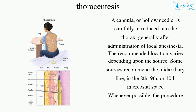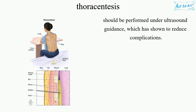A cannula, or hollow needle, is carefully introduced into the thorax, generally after administration of local anesthesia. The recommended location varies depending upon the source. Some sources recommend the mid-axillary line, in the 8th, 9th, or 10th intercostal space. Whenever possible, the procedure should be performed under ultrasound guidance, which has shown to reduce complications.